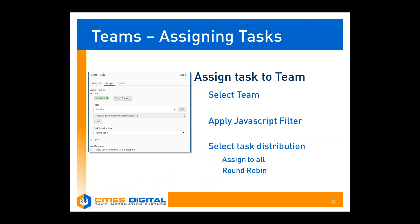You can assign user tasks to a team just as you would previously assign them to any specific user in the process modeler. First, select the team you want to assign that task to — in this case, the consulting team. Then configure any filters you'd like to apply; here I've applied the PM filter for project managers. These filters are only applicable if you're assigning tasks based on role, so if you'd like to ignore roles and assign to the whole team, just leave the filter unassigned. The filters themselves are configured using JavaScript, but sample code and examples are provided in the configuration.